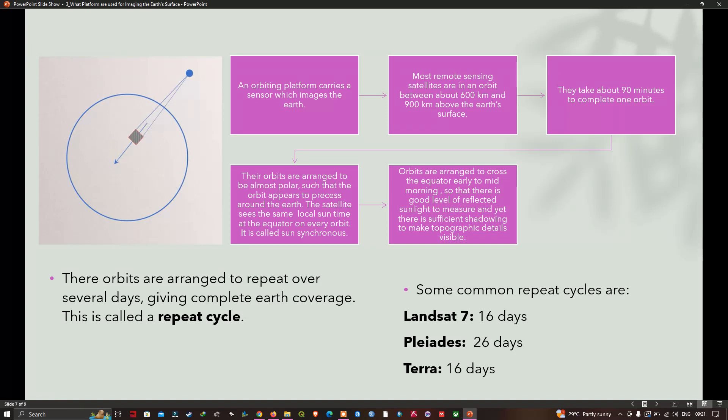There is sufficient shadowing to make the topographic detail visible. The sensor carries images directly underneath the satellite so that the forward motion of the platform allows a strip of imagery to be recorded. In order to achieve global imaging, the orbits are arranged to repeat over several days, giving complete earth coverage. This is called a repeat cycle. Some common examples of repeat cycles are: Landsat 7 has 16 days, Terra has 16 days, and Pleiades has 26 days. For example, Landsat 7 records all the earth's surface in 16 days repetitively.